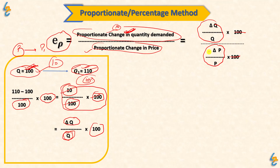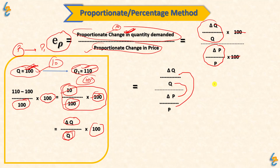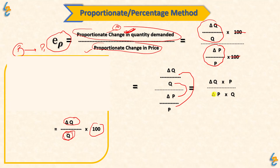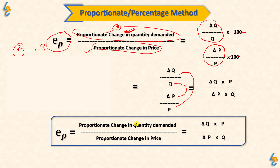From 100 and 100 cancelling out, what we get is: (ΔQ / Q) divided by (ΔP / P), which is proportional change in quantity divided by proportional change in price. We can rearrange this to: Delta Q multiplied by P, upon Delta P multiplied by Q. So the formula becomes: Ed = (ΔQ × P) / (ΔP × Q).